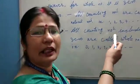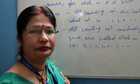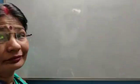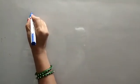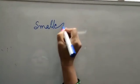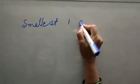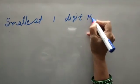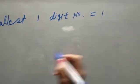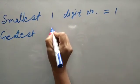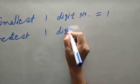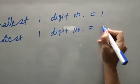Now it is clear — natural number and whole number. Let's say smallest and greatest number. Smallest one digit number is equal to one. Greatest one digit number is equal to nine.